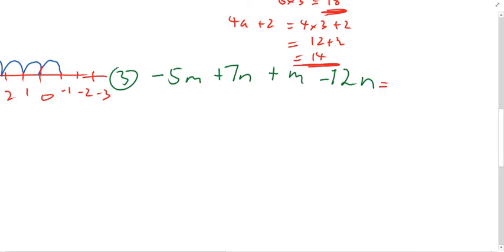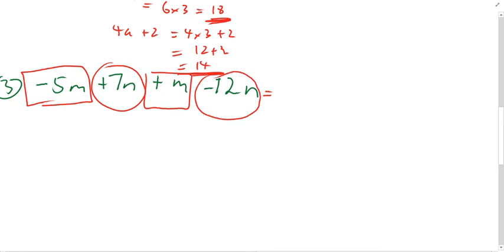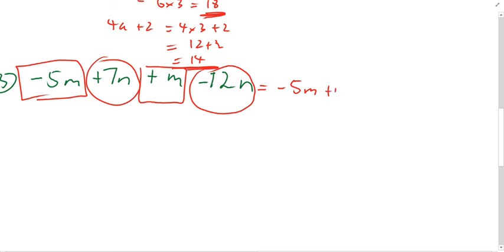In the third example, I group the m's together and the n's together, taking the sign to the left of each term. I get five m minus five m plus m, plus seven n minus twelve n. For the m's: the negatives win the battle by four, giving negative four m. For the n's: seven positives versus twelve negatives — the negatives win by five, giving minus five n. I can't combine the m's and n's together for the same reason as before.